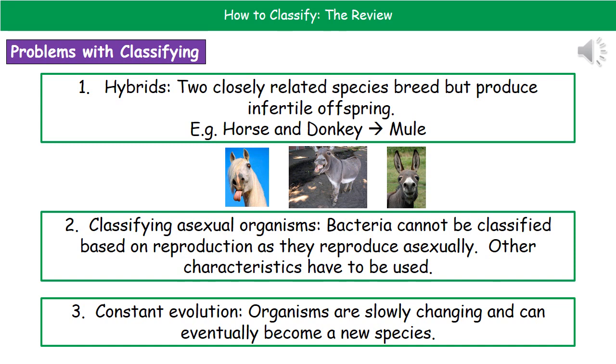The second problem is classifying asexual organisms — ones that reproduce without sexual reproduction. Bacteria, for example, can't be classified based on their reproduction because they reproduce asexually, so we need to look at other characteristics instead.